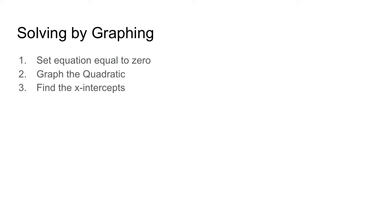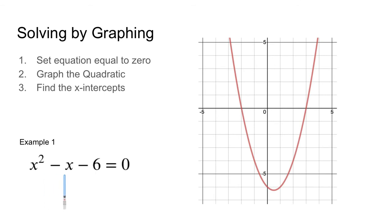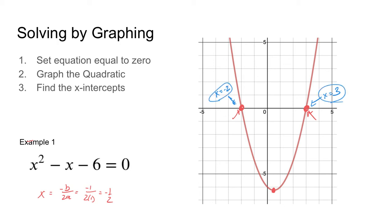The solutions to the quadratic equation are going to be the x-intercepts. Let me show you what I mean. Here's an equation: x squared minus x minus 6 equals 0. I graphed this equation over here on the side. I did the whole opposite of B over 2A thing — negative 1 over 2 times 1 to get that vertex x-value of negative one half. But the important thing is the two x-intercepts. You'll see one at x equals 3 and one at x equals negative 2. Those are the solutions to this quadratic equation.